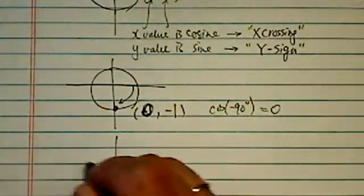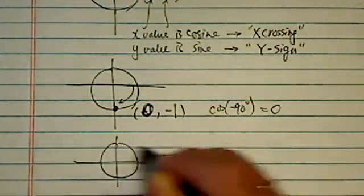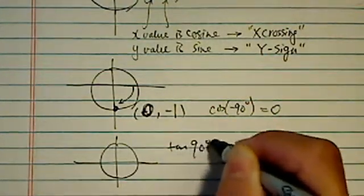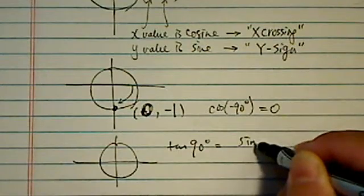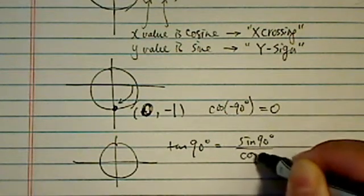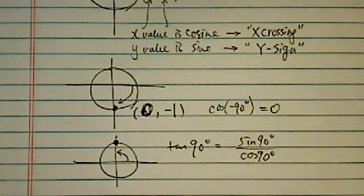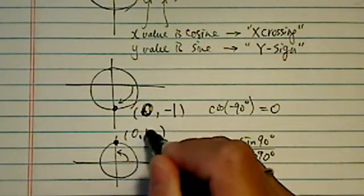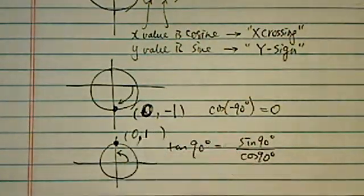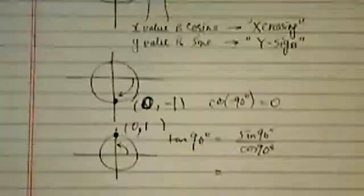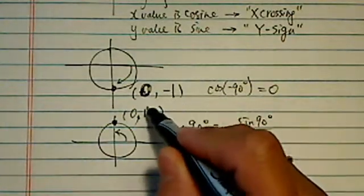Now, one more to go, and we're interested in the tangent of 90. Tangent is equal to sine of 90 over cosine of 90. So we're basically looking for this angle, going counterclockwise. Let's write the coordinates down, and we have 0, 1. Okay, so tangent of 90 is sine, and remember, y sine.